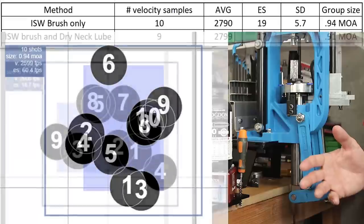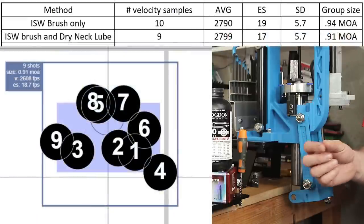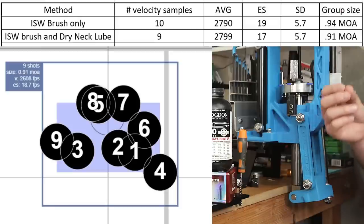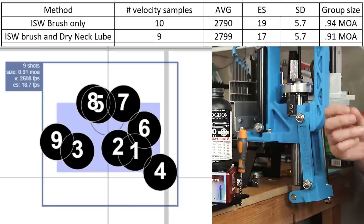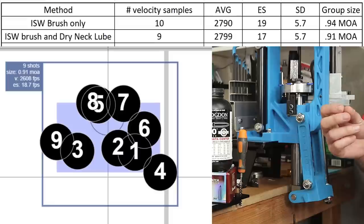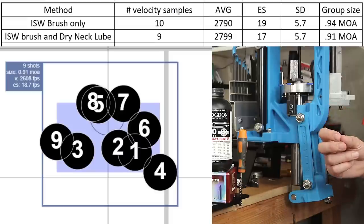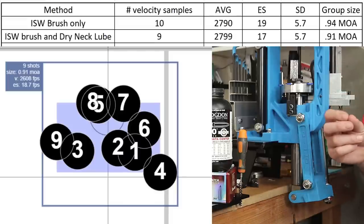With an identical process except adding dry neck lube prior to seating the projectile, on the 9 samples I loaded, our average velocity was 2799 feet per second. Our standard deviation was an identical 5.7 and our extreme spread was 17 feet per second. That 9 shot group yielded a 0.91 MOA group.